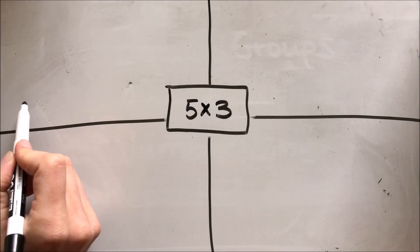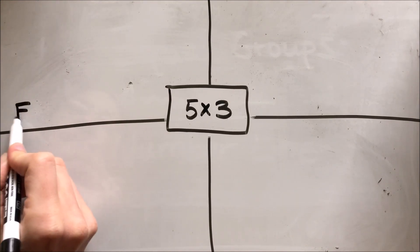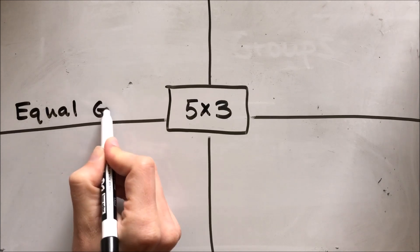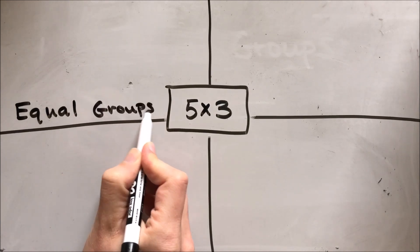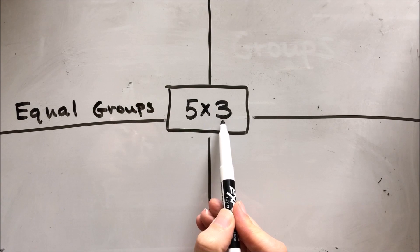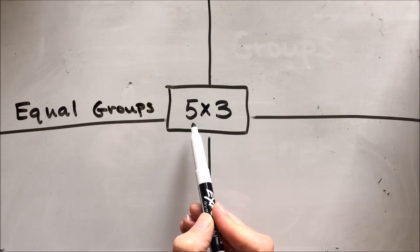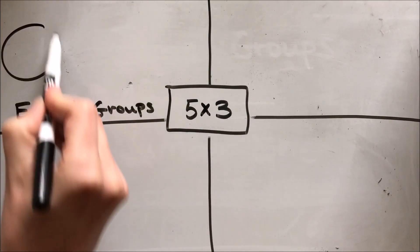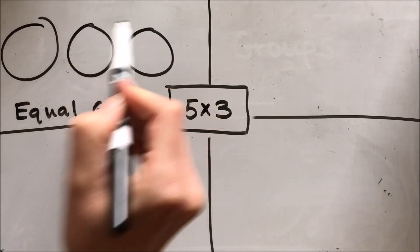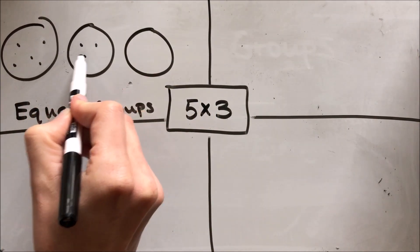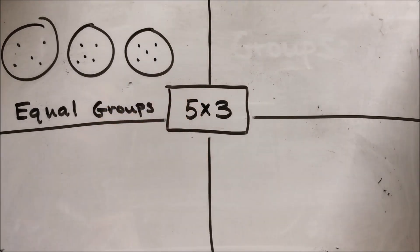First, we're going to show five times three using equal groups, which is what we did last week. I'm personally going to draw the picture using three groups of five, but you could also do five groups of three. I'm going to draw three circles and put five items in each group. There are my equal groups.